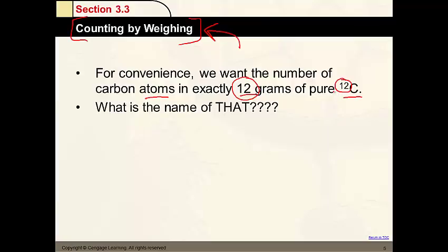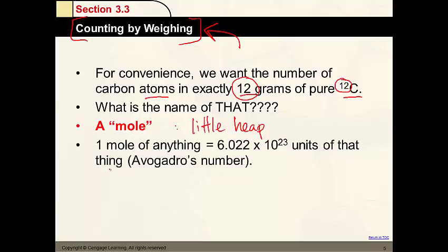How many atoms would we need to have 12 grams of pure carbon-12? What would we call that? It's actually referred to as a mole — kind of strange. It means 'little heap.' So if you have a mole of carbon, it's going to be about a handful — 12 grams is about a teaspoonful. A mole of anything is 6.02 times 10 to the 23rd, called Avogadro's number, named in honor of Amadeo Avogadro. It's an incredibly huge number.